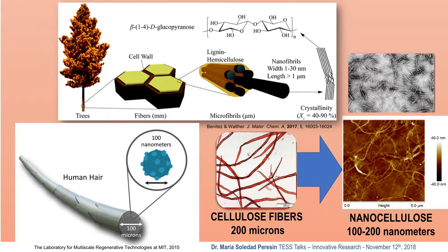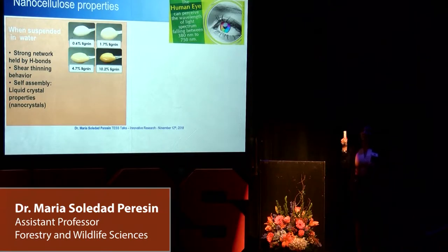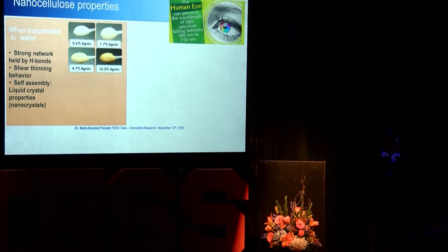Regarding the properties of nanocellulose — when we have it in suspension, we can have a very stable gel, and I've brought some for your entertainment to show you. When we suspend microfibers in water, we have a suspension we can filter out and make regular paper. But with nanocellulose at the same concentration — only about 2% solids — we have a very strong gel that stays stable for over a year, and it has a very particular rheological behavior, meaning it flows differently than regular fibers.